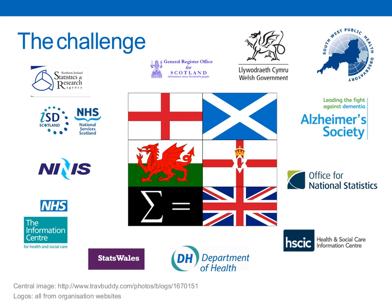This slide shows all the different types of organizations we worked with in order to gather the data for the Atlas, from the Alzheimer's Society to the Office for National Statistics. In Northern Ireland, we had to use the Northern Ireland Statistics Research Agency, and the list goes on and on.